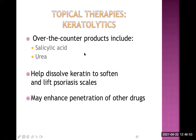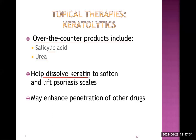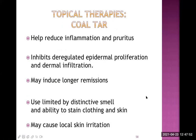Another type of topical agent is keratolytic drugs. These remove the flecks or scales and are available over the counter. Salicylic acid and urea are the keratolytic agents — they help dissolve keratin to soften and lift the psoriasis scale, and they also enhance the penetration of other drugs.